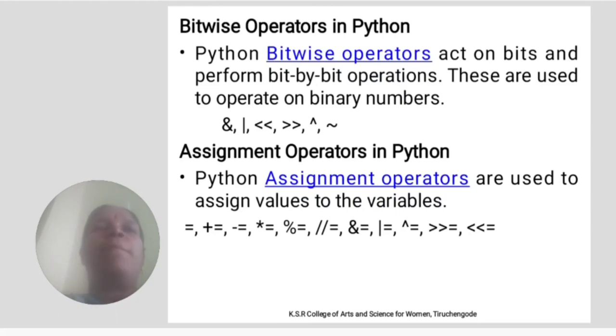Bitwise operators in Python. Python bitwise operators act on bits and perform bit by bit operations. These are used to operate on binary numbers: bitwise AND, bitwise OR, bitwise NOT, etc.